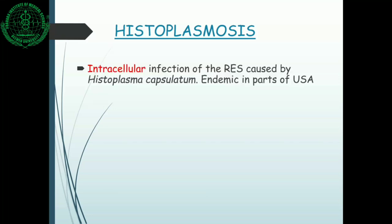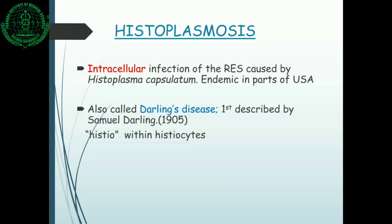The first causative agent we will discuss today is histoplasmosis. The name of the infection is histoplasmosis and the causative agent is Histoplasma capsulatum. All four causative agents or diseases are actually endemic in various parts of the world. Histoplasma capsulatum causes an intracellular infection of the reticuloendothelial system and is endemic in parts of the United States. It is also called Darling's disease, as it was first described by Samuel Darling in 1905.